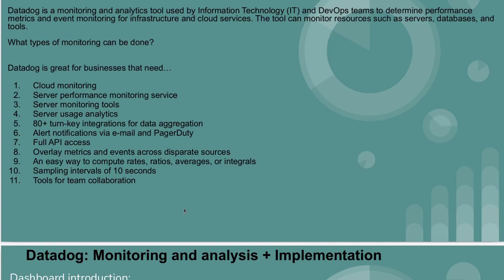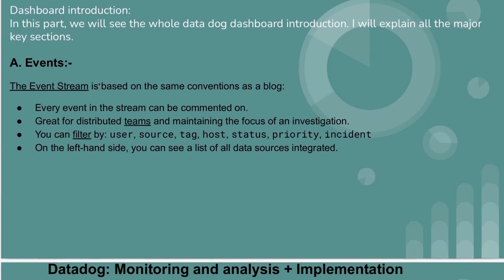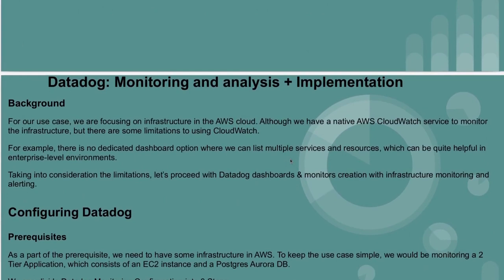Under the dashboard, the first thing is events. Events are essentially a collection of metrics — every event in the stream can be commented on, which is great for distributed teams and maintaining the focus of investigation. You can filter by user, source, tag, host, status, priority, and incident. On the left-hand side, you can see a list of data sources integrated. I will show you this during the lab session after integrating Datadog with AWS.